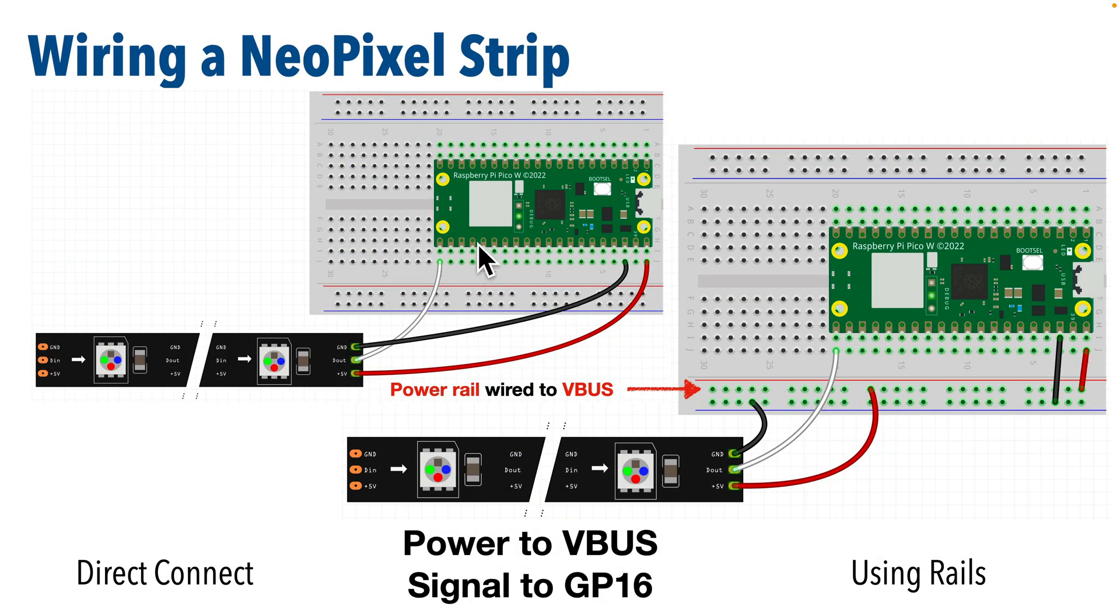This is an example of using a NeoPixel strip connecting directly to power and ground pins on a board versus connecting using the rails. This NeoPixel strip uses the bottom rail for ground and that rail is also attached to this pin, which is one of the Pico's ground pins. The power wire goes to this rail which is also connected to the V bus wire on the Pico.